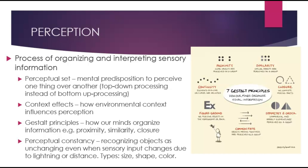Top-down processing is when perception is guided by higher-level mental processes, like prior knowledge, experiences, and expectations, as opposed to bottom-up processing, where we're essentially processing the raw sensory input. For example, a child seeing a firetruck for the first time processes it based on color, size, and sound.